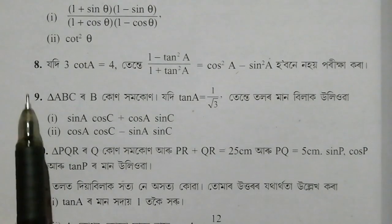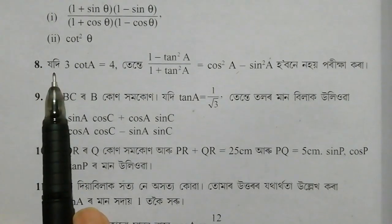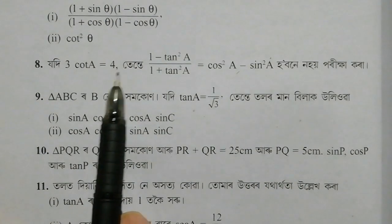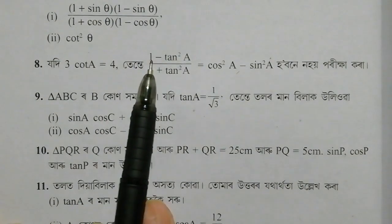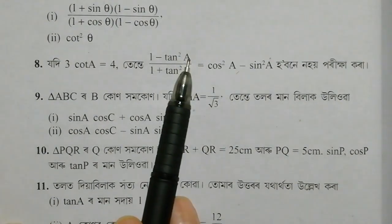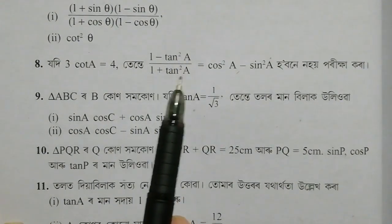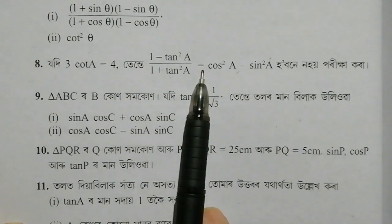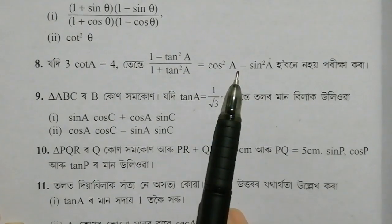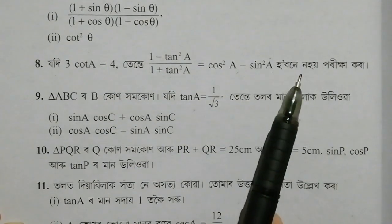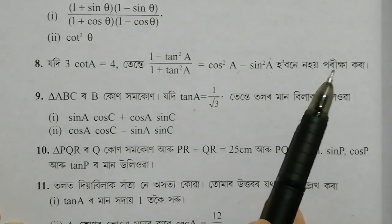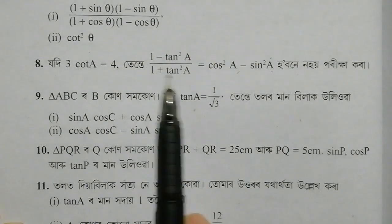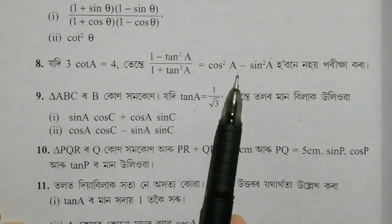Now question number 8: given that 3 cot A equals 4, prove that 1 minus tan square A divided by 1 plus tan square A equals cos square A minus sin square A.